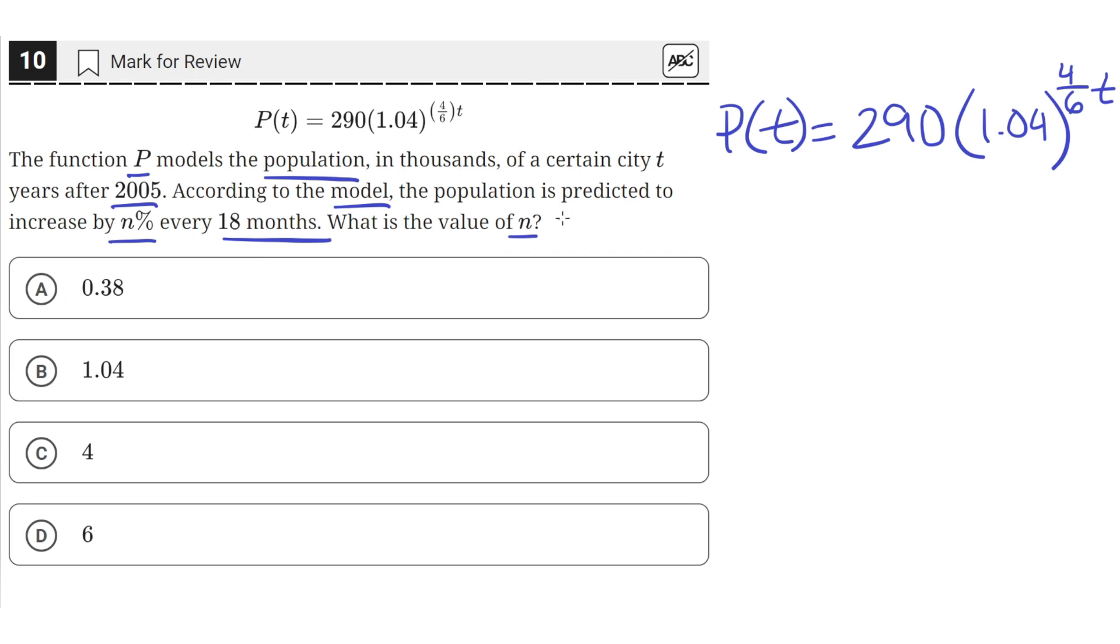We know that 18 months is 1 year and 6 months, so that's just 1.5 years. So let's plug in 1.5 years for t into the population equation and see how much the population increases by.